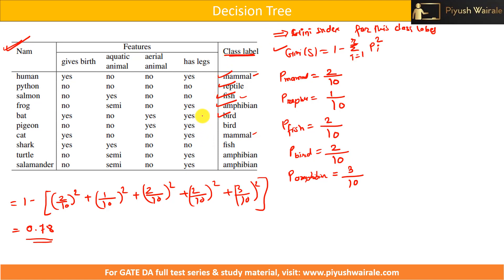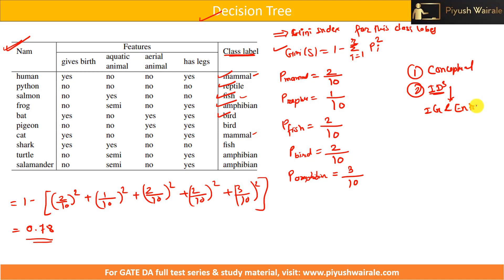That's it for this topic on decision trees. In the first lecture we discussed the conceptual part of decision trees; in the second lecture we worked through an example using the ID3 method, covering information gain and entropy for each attribute and attribute values. In this video we discussed the Gini Index. You can definitely expect one numerical question based on this topic, and it will be easy to solve. Thank you.